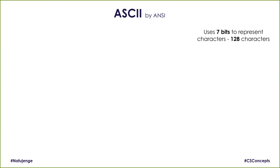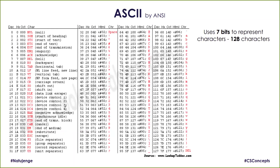ASCII uses 7 bits to represent characters, and 7 bits gives us 128 possible values. The ASCII table looks as displayed on the screen. We have all the letters, all the numbers, symbols 0 to 9 represented — you can see 0 is represented as 48. We have letters A to Z in uppercase and A to Z in lowercase.